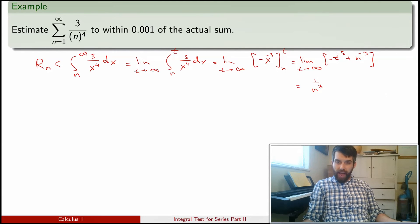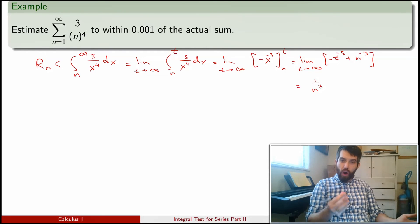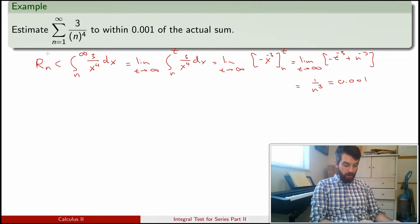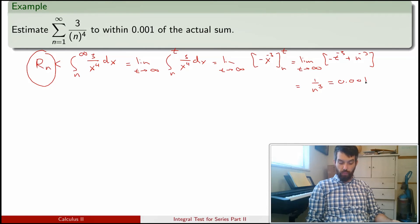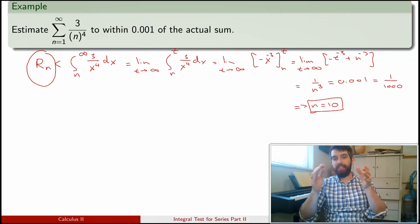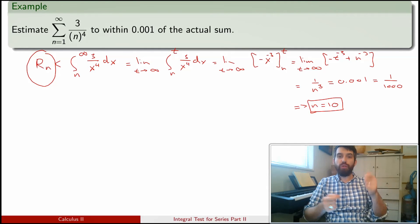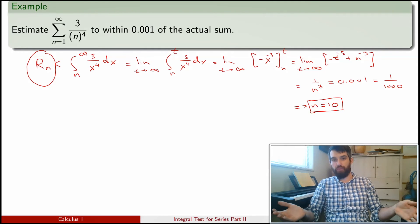What I get is just 1 over n cubed. Following my chain of inequalities, the remainder Rn is less than or equal to 1 over n cubed. What I claim that I want this to be equal to is 0.001. I want my remainder to be less than or equal to 0.001, which is the same thing as 1 over 1000. That tells me that n has to be equal to the number 10. Now I know that if I take 10 terms, then if I take that sum, the sum of just the first 10 terms, then it is within 0.001 of whatever the true value is.